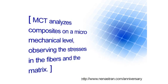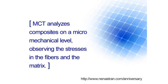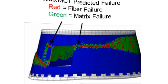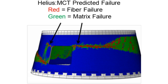Where MCT has come in is that MCT is able to model composites on a micro-mechanical level. It looks at what's actually going on between the fiber and the matrix — the stresses in the fiber versus the stresses in the matrix — and that allows a much more accurate prediction of when failure is going to occur. It uses a lot more information about the material than other failure theories. We've coupled that with our progressive ply failure analysis, and at V10.1 we've got 3D MCT, so we're able to do MCT for solids as well as shells, and progressive ply failure for the shells.